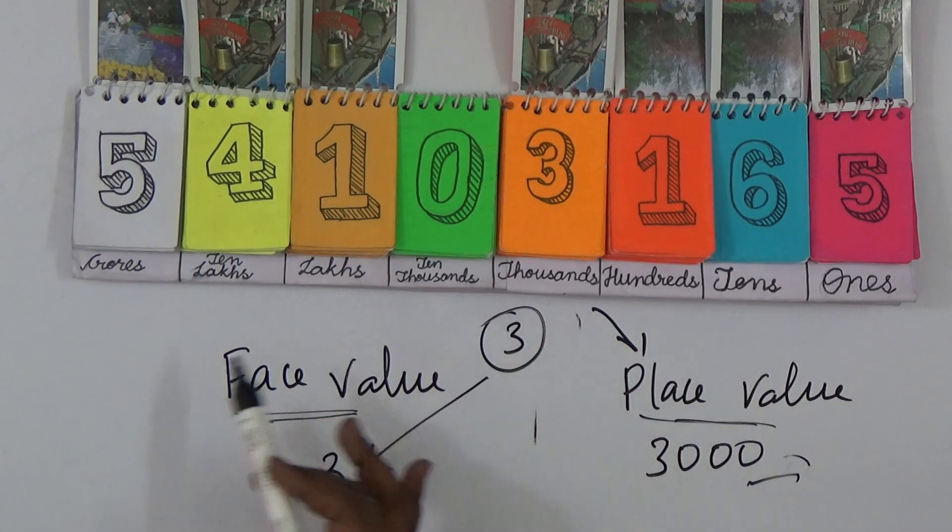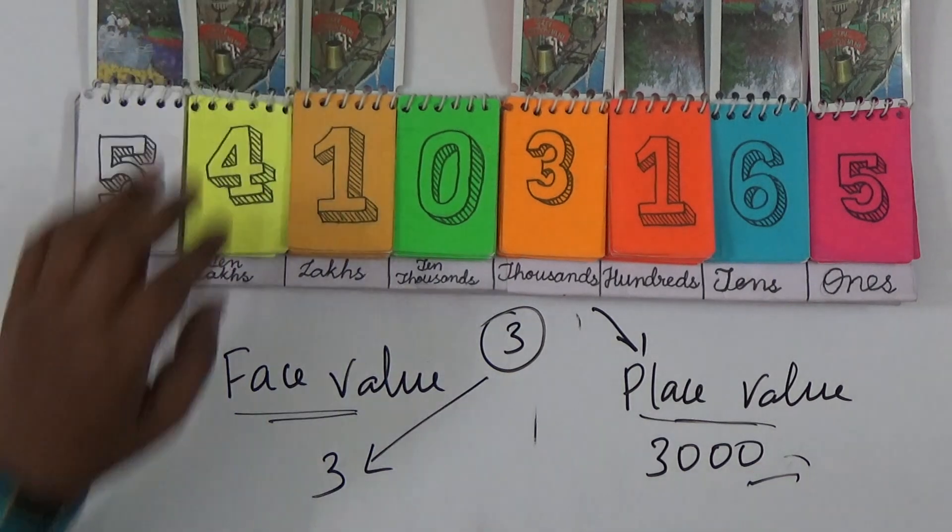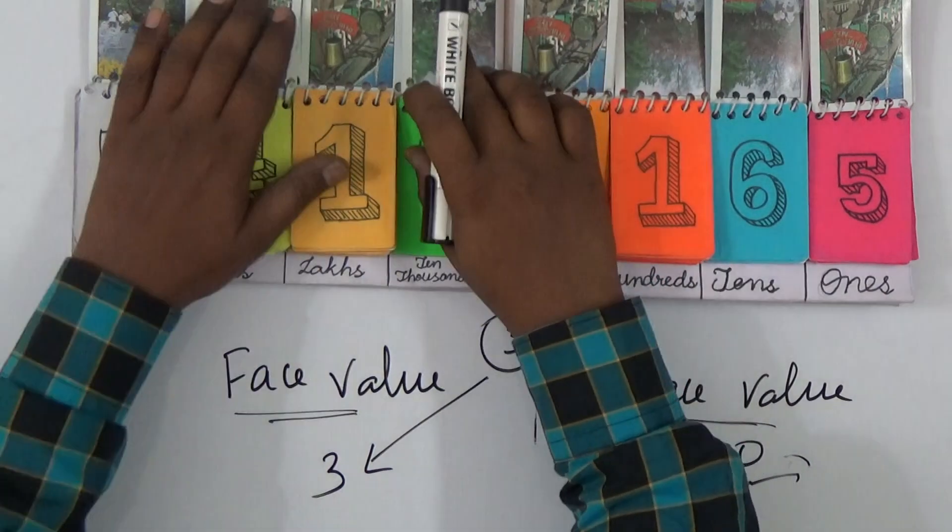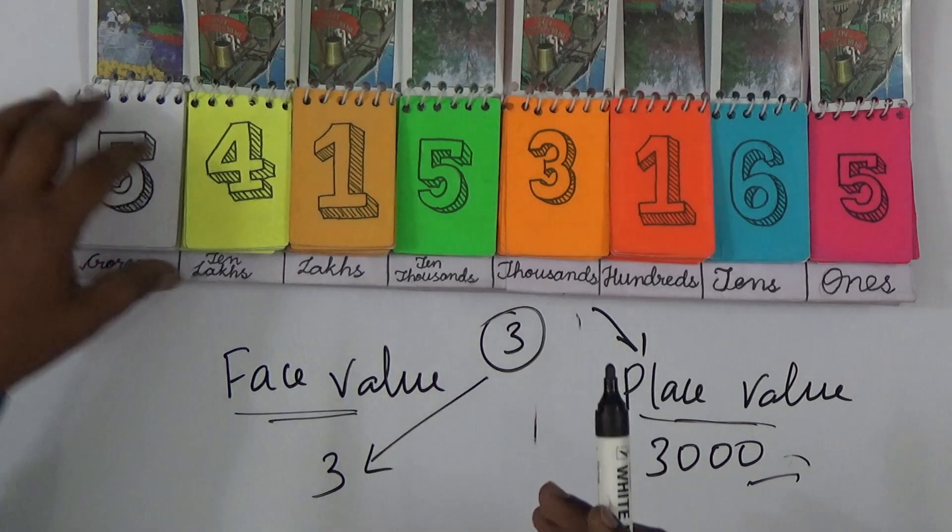On the other side, the English system also you can use - that is after thousands, you have millions, billions. This is the Indian system I'm applying. This is one of the main uses to find out the concept of face and place value, and at the same time reading the number.